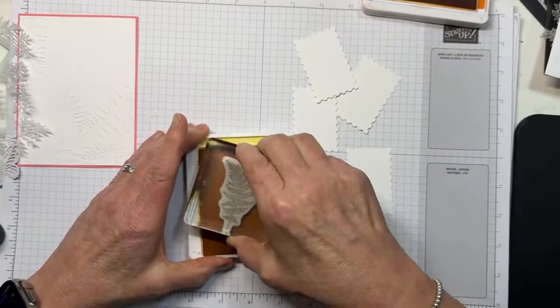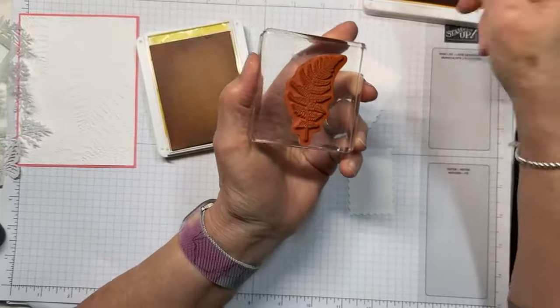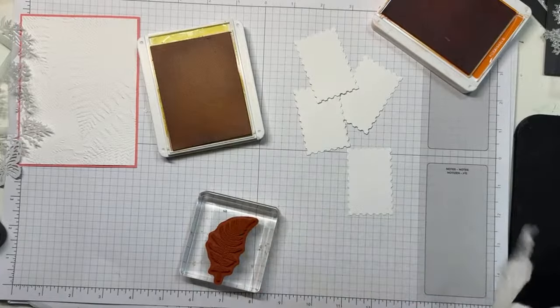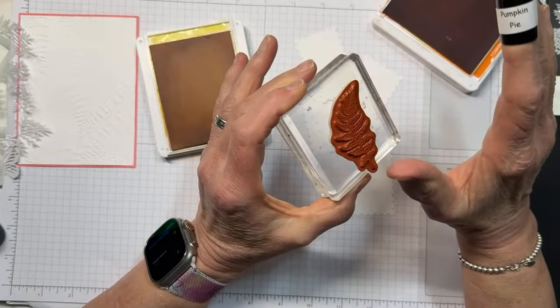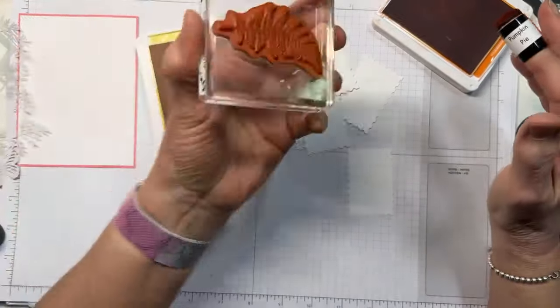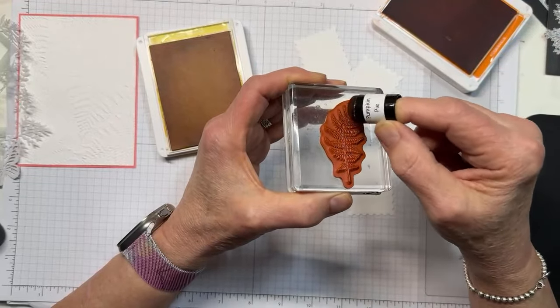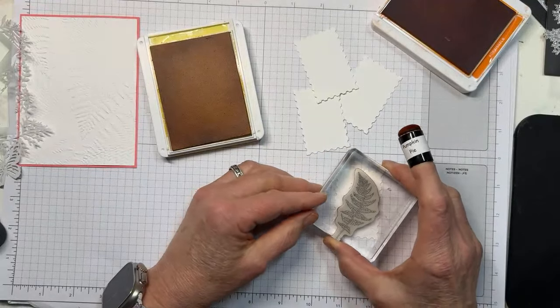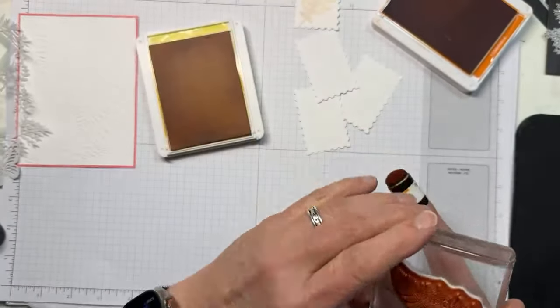To begin with, I'm going to ink that fern with the Daffodil Delight. And then I'm going to take my sponge dauber, my Pumpkin Pie dauber, and daub it in the ink pad. And then every time you do this, we're going to stamp it six times total in this card. Every single time you do it, it's going to look a little bit different. That's the fun of this way to do business. So we inked with the Daffodil Delight, we've got our Pumpkin Pie on our dauber, and I'm just going to add it kind of on the stamp. And then we're going to stamp that postage die cut.